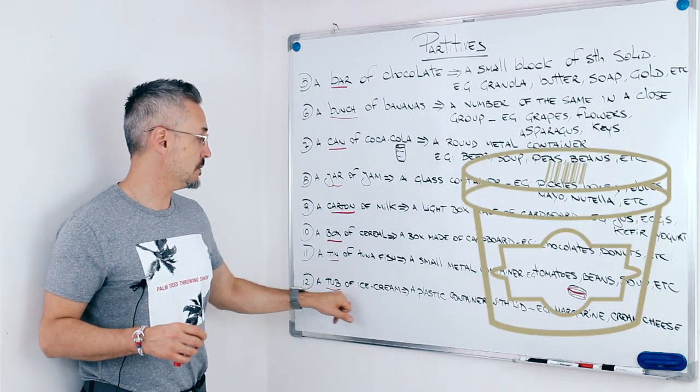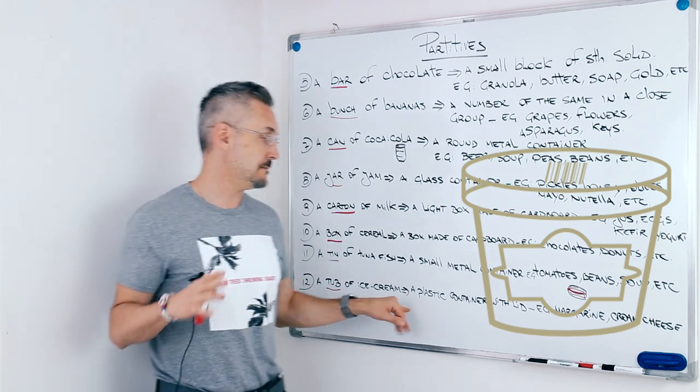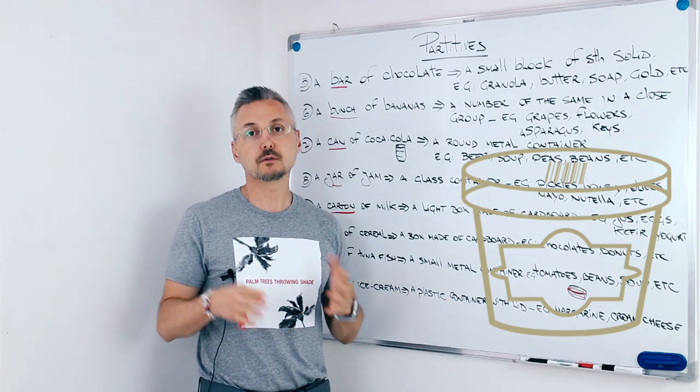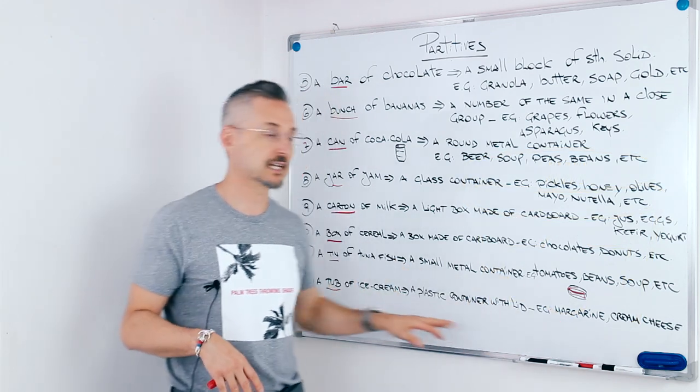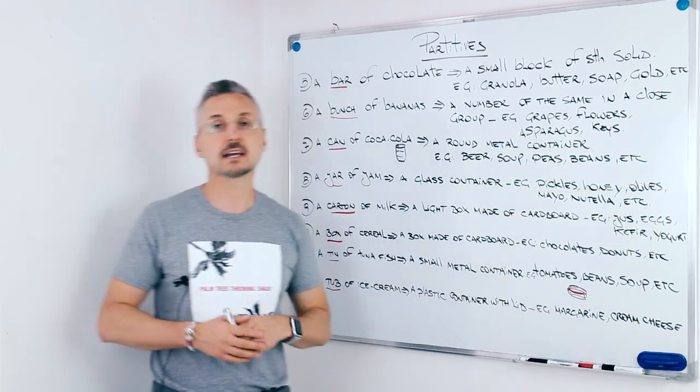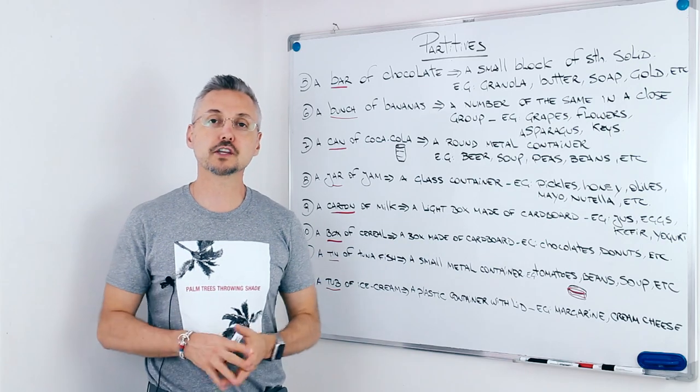Anyway, the next one is a tub of ice cream. So, this is a plastic container with a lid, obviously. So, a tub of margarine, a tub of cream cheese, etc. I hope you enjoyed the lesson.